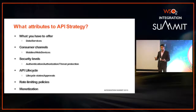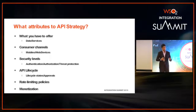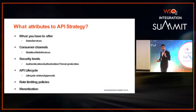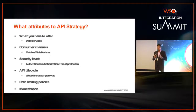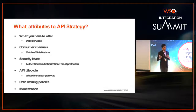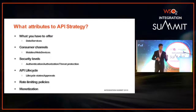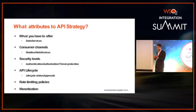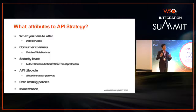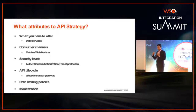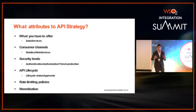You also need to figure out what consumer channels you are expecting — it could be mobile, web, or some other device. This is important because depending on the consumer channel you may need to modify the behavior of your API. For example, mobile applications might expect very lightweight API responses, while web applications might expect very detailed API responses, so you need to design your API implementation to cater to these requirements.